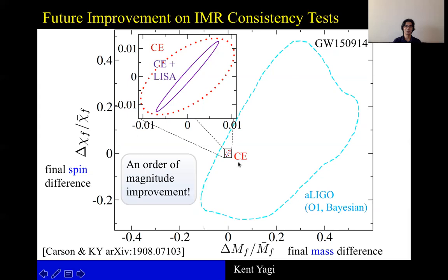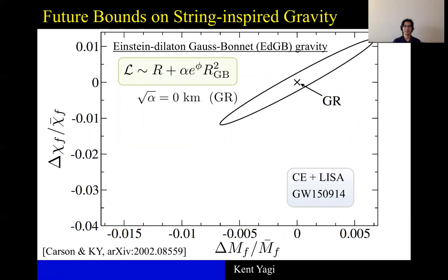Now, just like in the parameterized test case, we are now interested in how to apply these tests to specific theory. And again, let's take Einstein-dilaton-Gauss-Bonnet as an example where I have already introduced how to obtain the correction in the inspiral portion of the waveform.